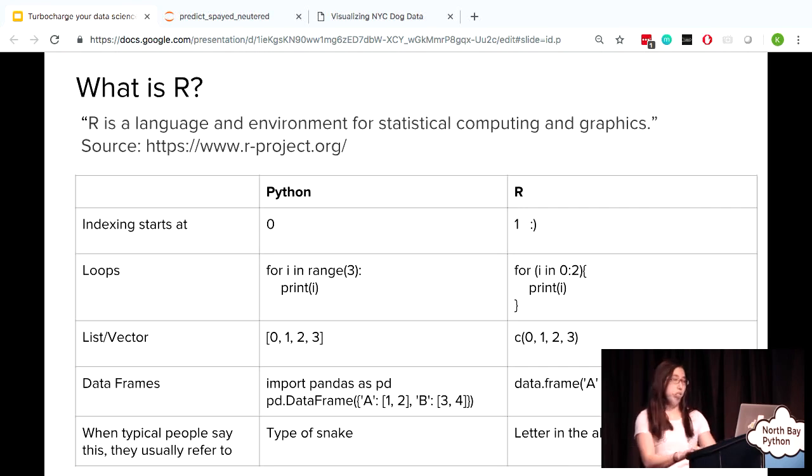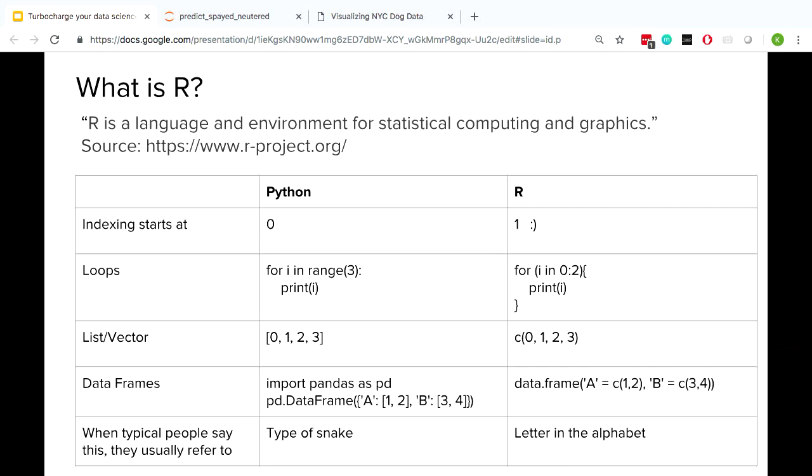But before jumping into this workflow, what's R? According to the R website, R is a language and environment for statistical computing and graphics. Basically, it's a programming language built by statisticians, not computer scientists, whose first name started with the letter R. It has some differences with Python. For example, you'll see indexing starts at one, not zero. But the syntax is largely the same. Loops have the same general structure. Lists in Python are called vectors in R, and they have similar properties. And data frames exist in both R and Python and share similar properties that make it easier to work with data.